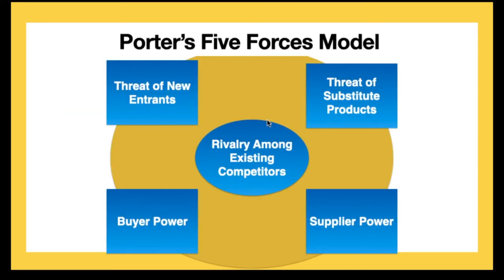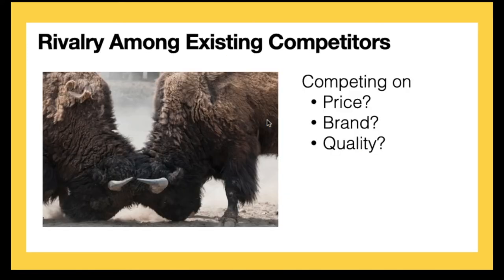The last force is rivalry amongst existing competitors. What do people compete on — price, brand, or quality? Think about products where there is not a lot of differentiation; if there's not much difference between product A and product B, they're probably competing on price. The question is how much competition — how much blood is in the water, so to speak — amongst the existing players in this marketplace. Now that you know what the five forces are, let's apply them to an industry.